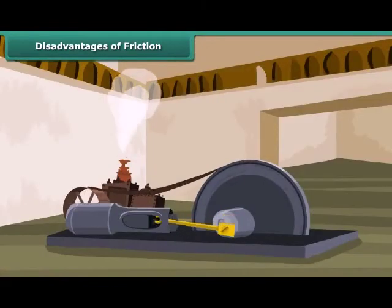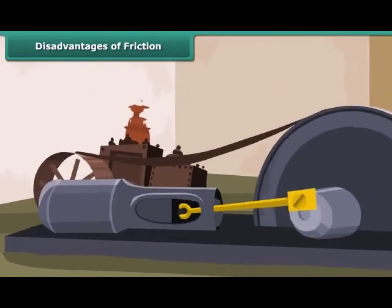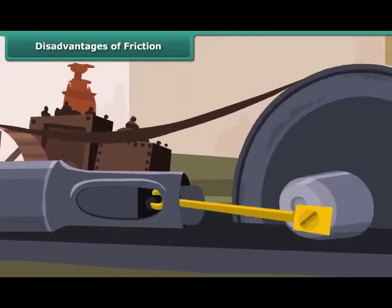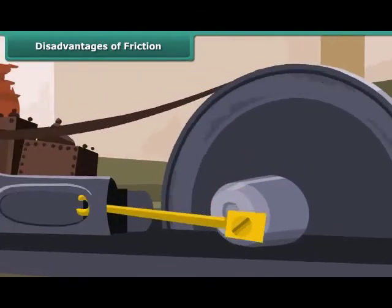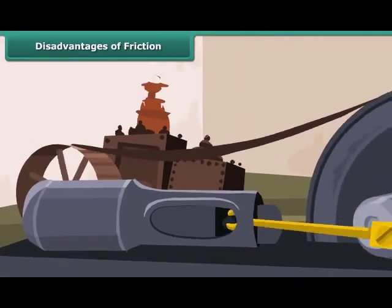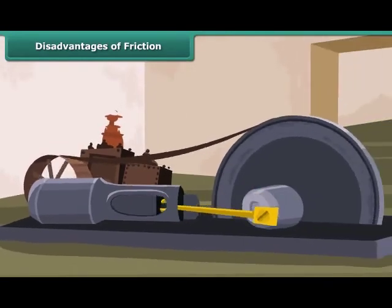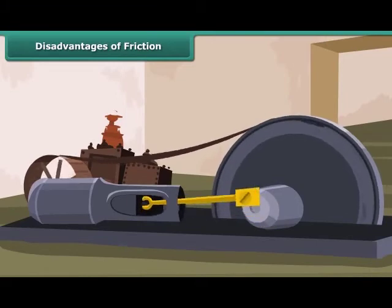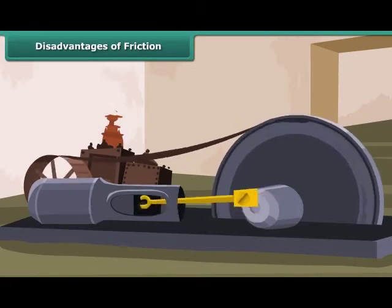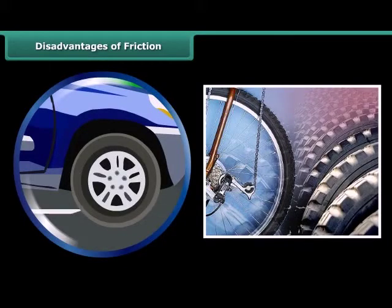Friction reduces the efficiency of machines. Some of the forces applied to run a machine are lost in overcoming friction between its moving parts. When the moving parts of a machine rub together, a lot of heat is produced, which damages the machine. Due to friction, the rubbing parts of a machine wear out gradually, and the tyres of a vehicle also wear and tear due to friction.